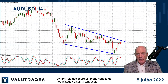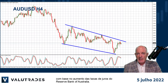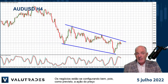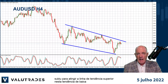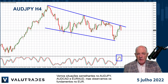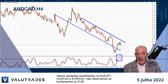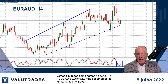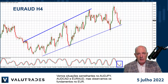Yesterday we talked about the counter-trend trading opportunities based on the Reserve Bank of Australia raising interest rates. The trades are setting up nicely as, as predicted, price action rose to reach the upper trend line in this bearish trend and the Stochastic Oscillator has just turned down from overbought. We see similar situations on Aussie Yen, Aussie CAD, and Euro Aussie, but watch the fundamentals on the Euro.